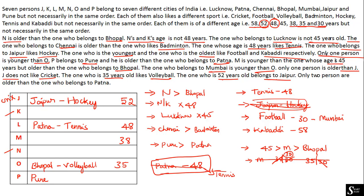Patna person is 48 years, and Pune is older than Patna. So the Pune person's age must be more than 48. Possibilities are 52 or 58. But 52 years belongs to Jaipur. Therefore 58 years belongs to Pune. Since P belongs to Pune, P is 58 years old. The oldest person is 58 years and likes Kabaddi, so Kabaddi is placed for P.